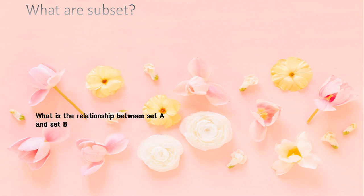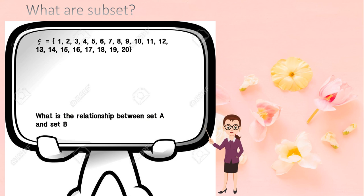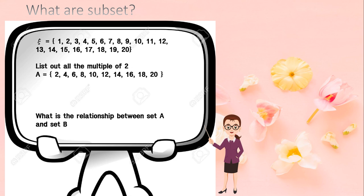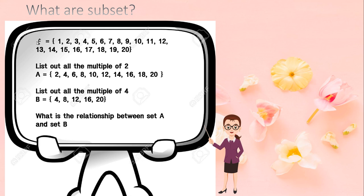Now we continue to our last topic for this chapter: subsets. To understand the concept, consider the universal set as numbers 1 to 20. List all multiples of two: {2, 4, 6, 8, 10, 12, 14, 16, 18, 20}. Then list all multiples of four: {4, 8, 12, 16, 20}. What is the relationship between set A and set B?